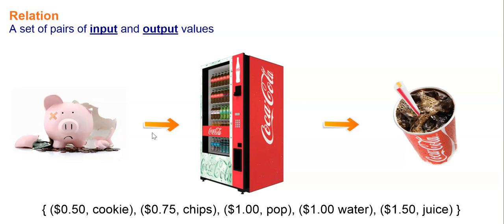So for example, you could think of a vending machine. You put money in and you get items out. For example, you might put in 75 cents and get chips, or $1.50 and get juice. You put something in, the input, the money, and you get something out, in this case, juice.